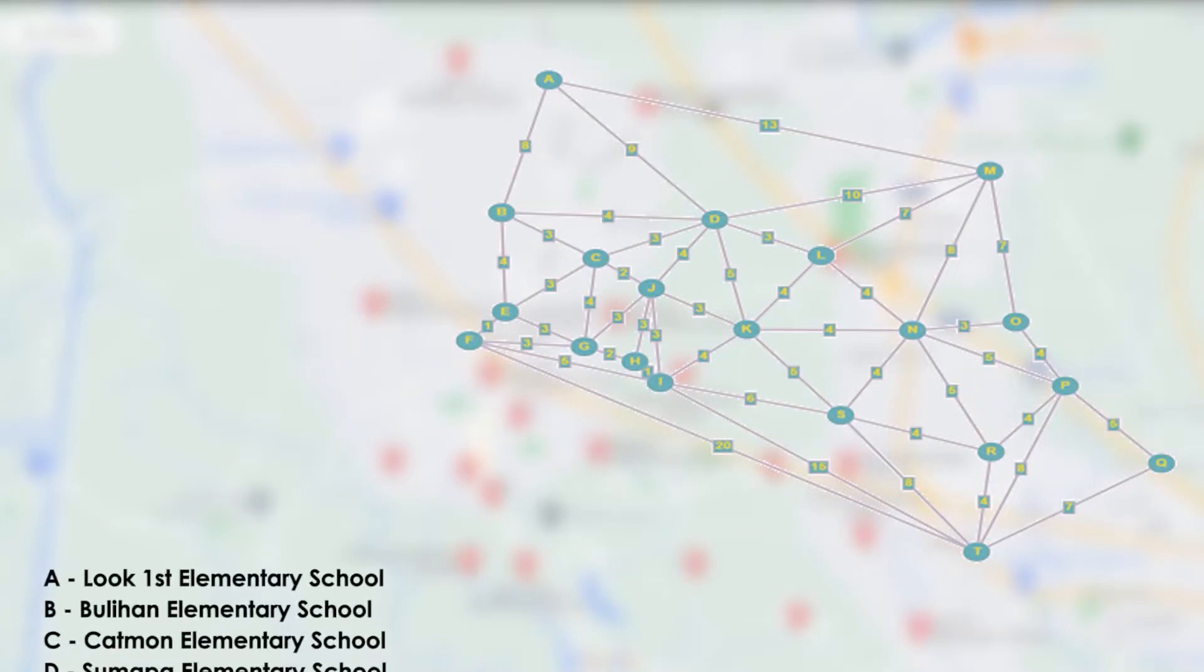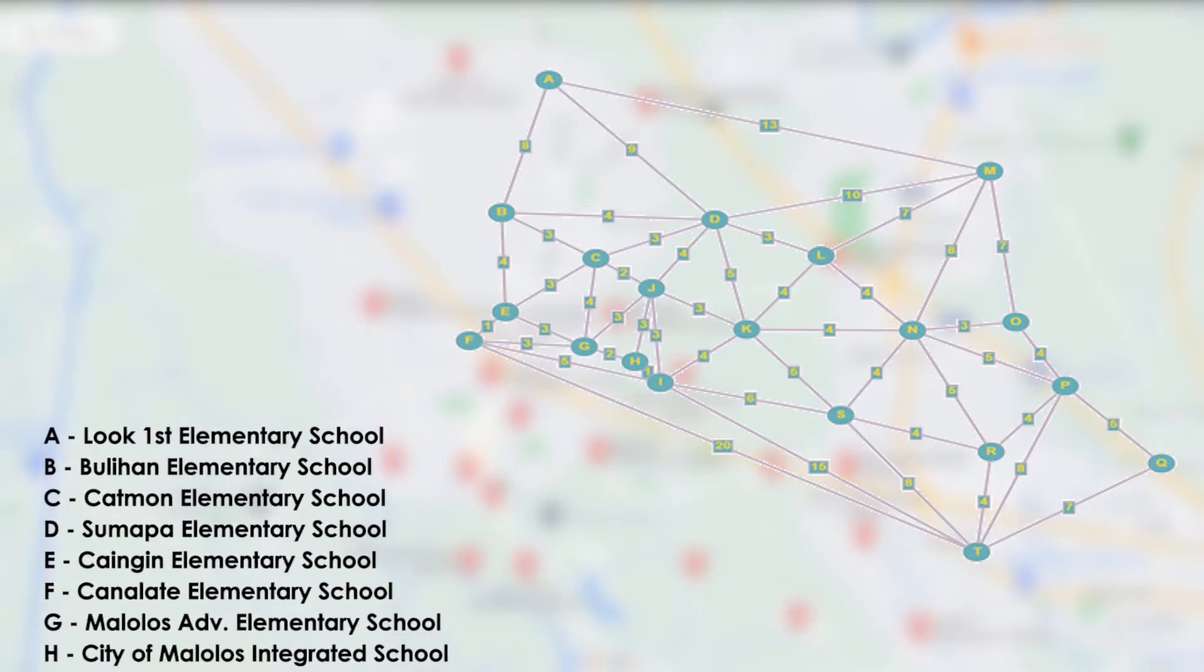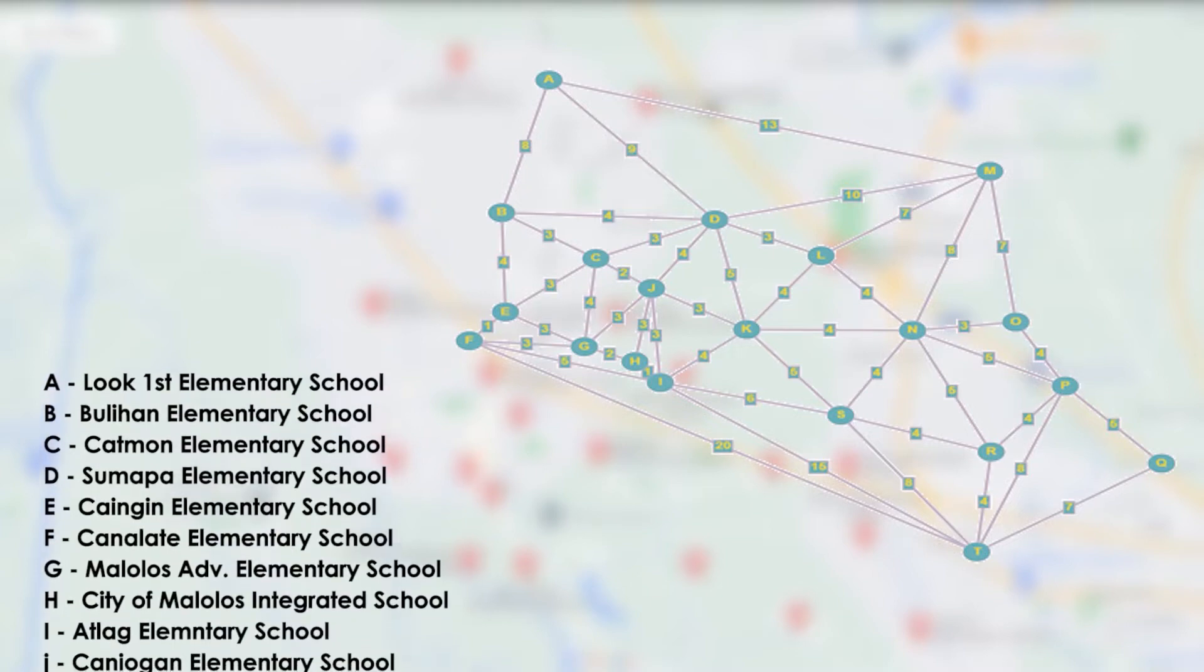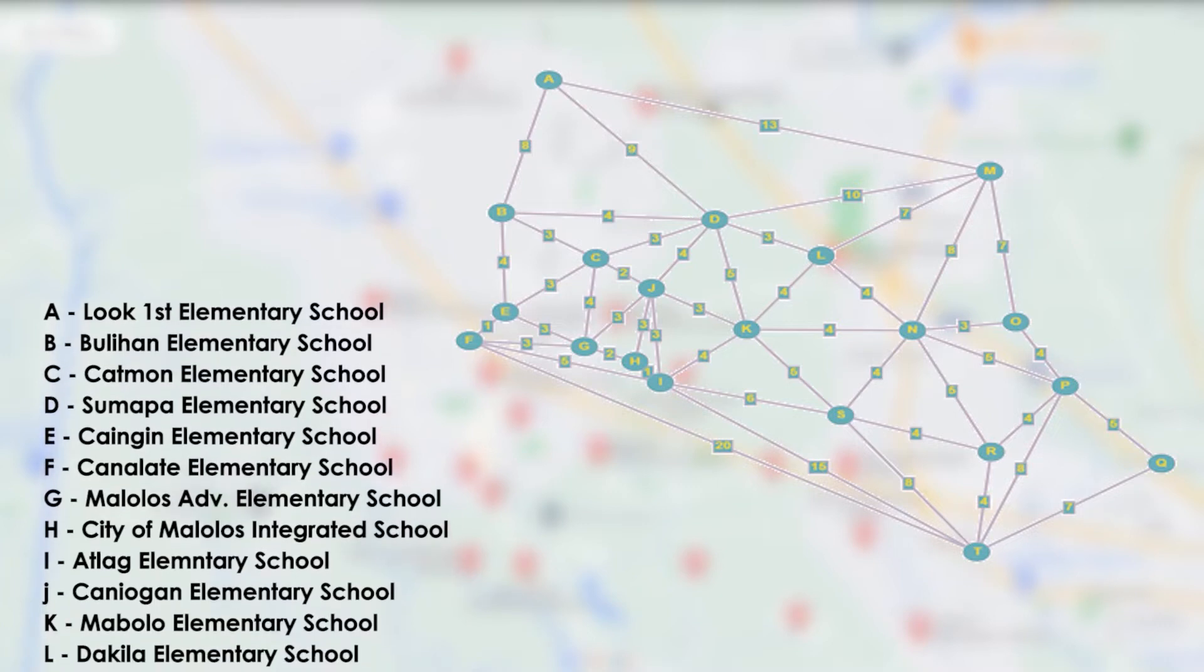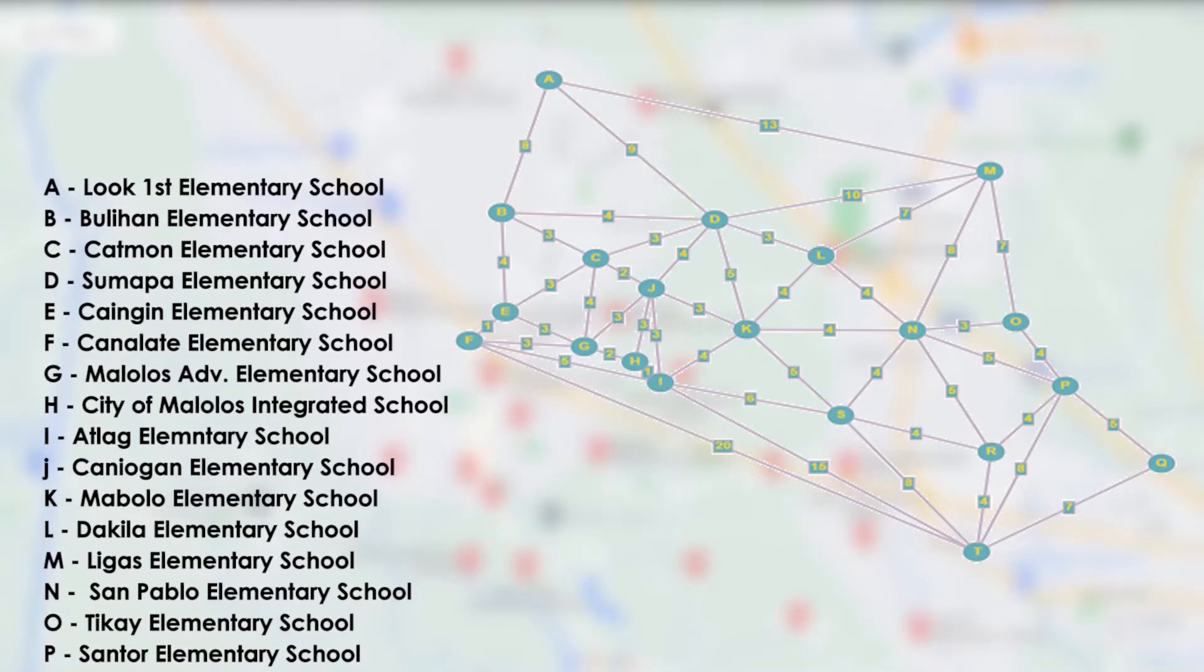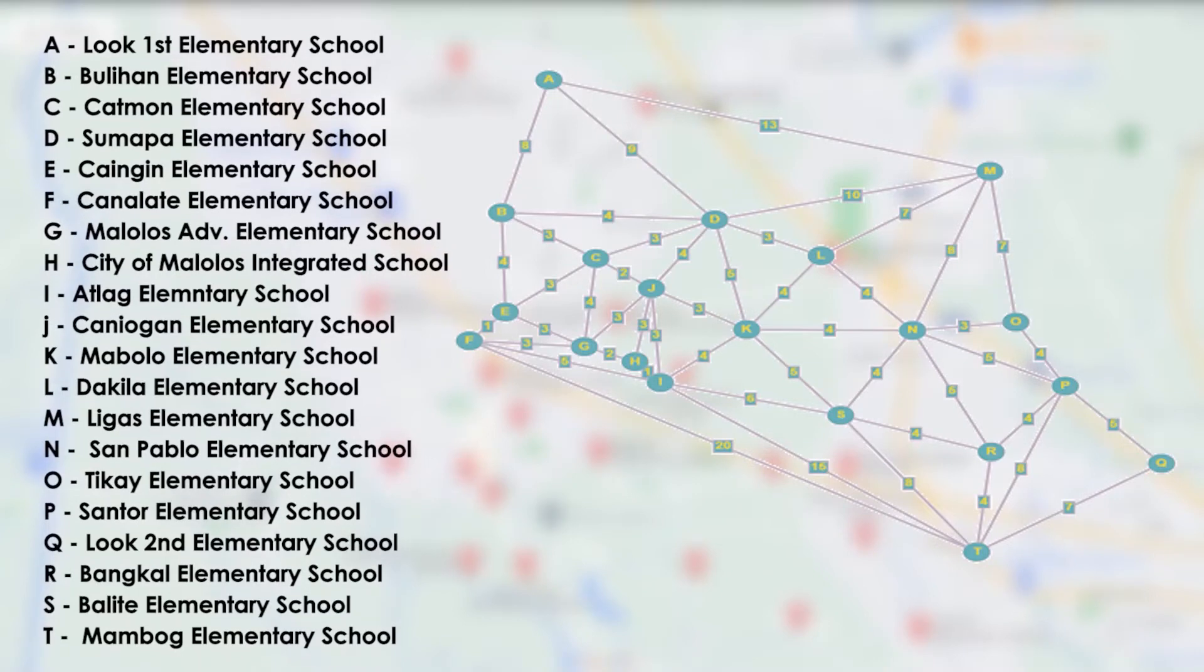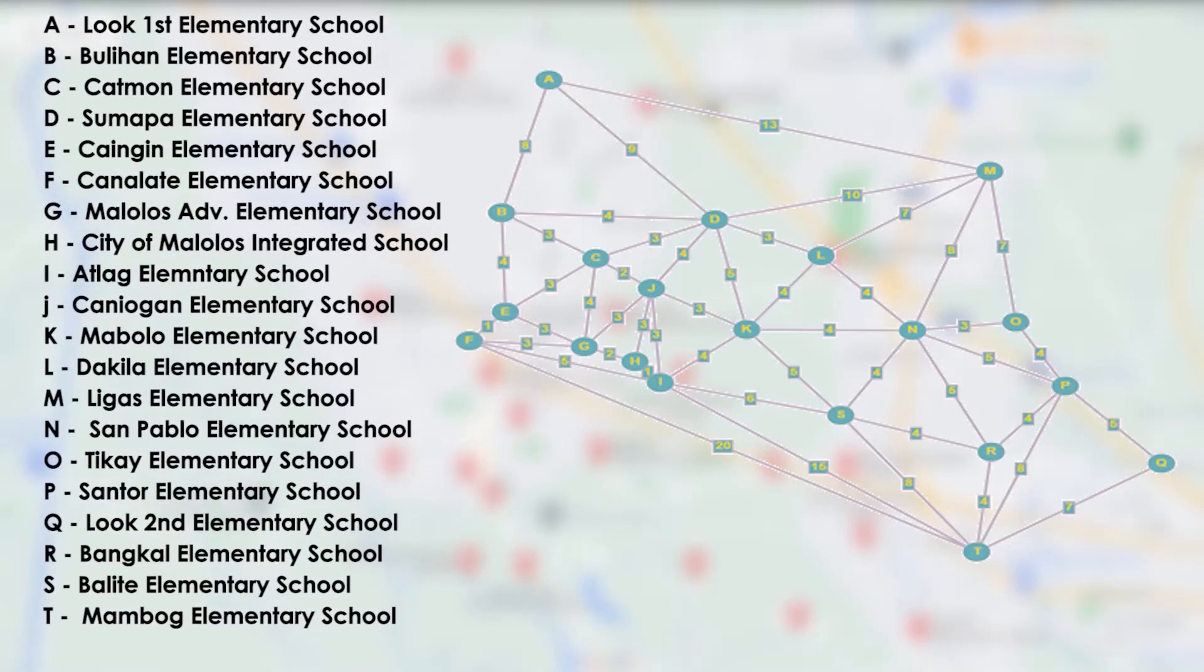A. Luok First Elementary School B. Bulihan Elementary School C. Katmon Elementary School D. Sumapa Elementary School E. Kaingin Elementary School F. Canalate Elementary School G. Malolos Adventist Elementary School H. City of Malolos Integrated School I. Atlag Elementary School J. Kanyogan Elementary School K. Mabolo Elementary School L. Dakila Elementary School M. Ligas Elementary School N. San Pablo Elementary School O. Tikay Elementary School P. Santor Elementary School Q. Luok Second Elementary School R. Bangkal Elementary School S. Balite Elementary School T. Mambog Elementary School.